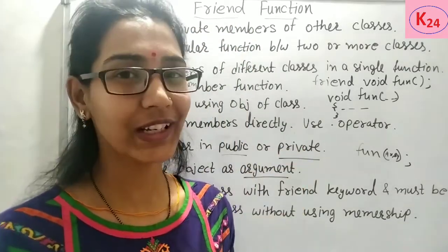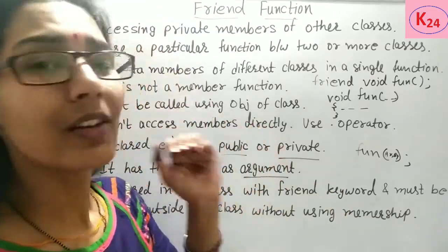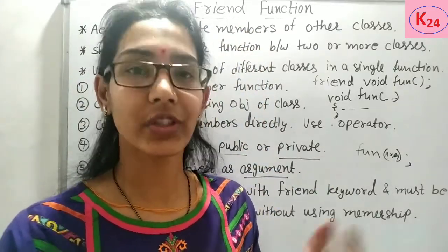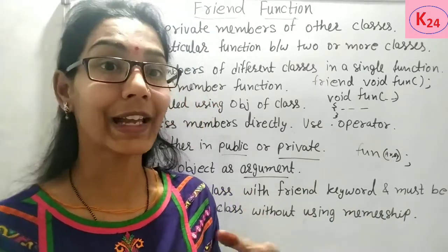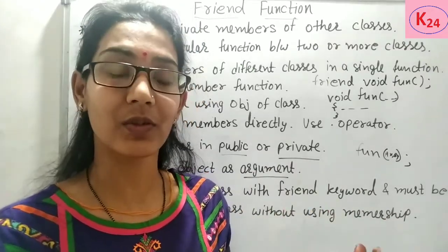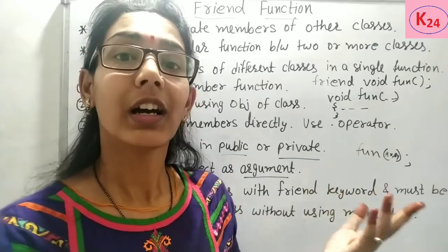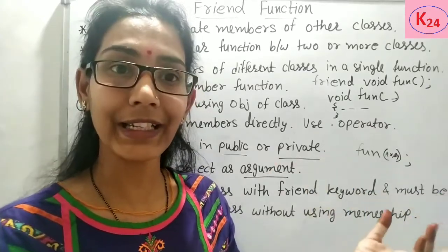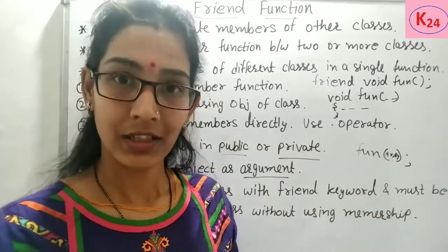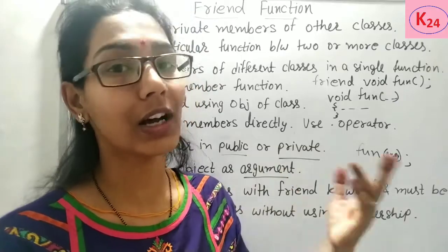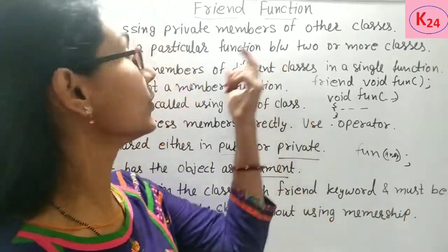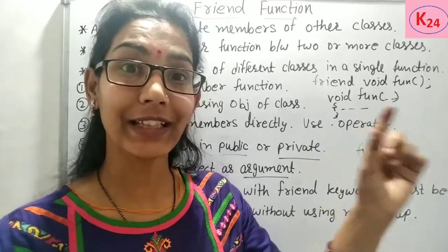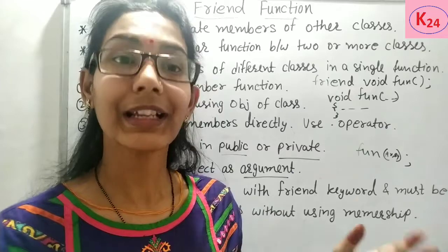To understand this concept more clearly, we use a simple example of why we use friend and why its name is friend. Suppose we have two or three friends — in friendship we share personal information, books, vehicles, anything. If a friend needs any information or help, we are always ready for our friend. The same concept is used in C++. In C++, if we want to access the private members of different classes, and these two classes are friends, then they can access each other's private members.